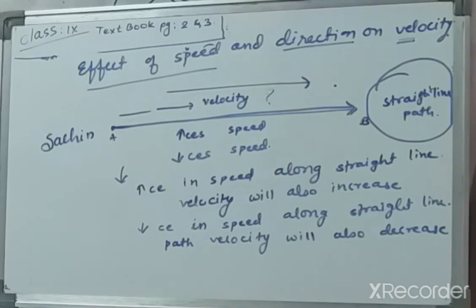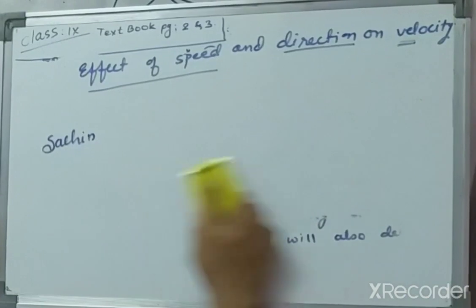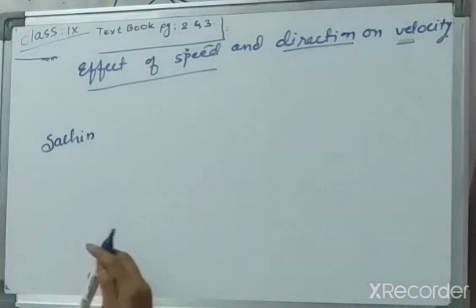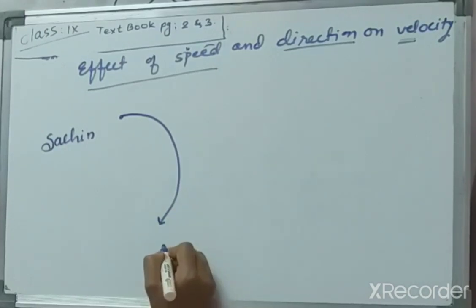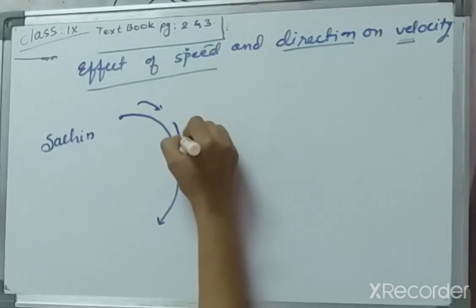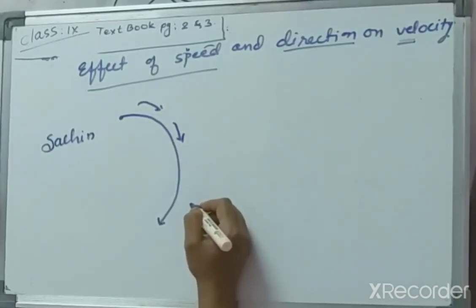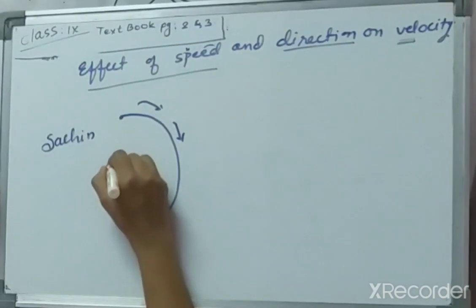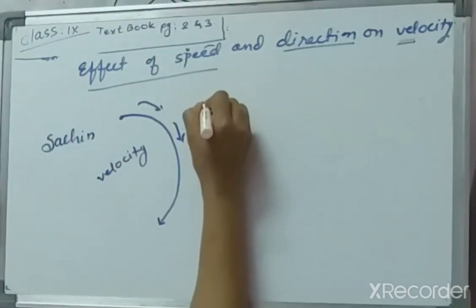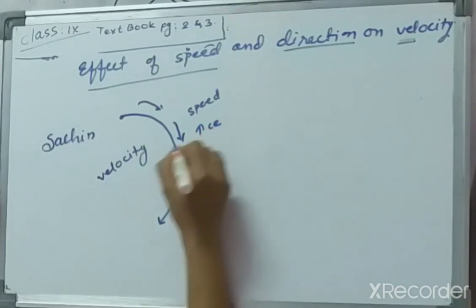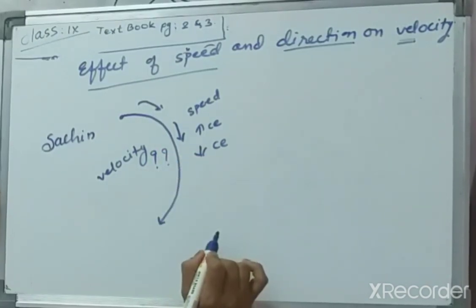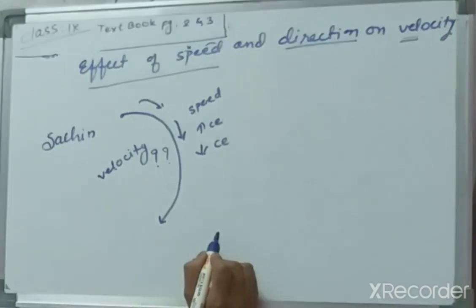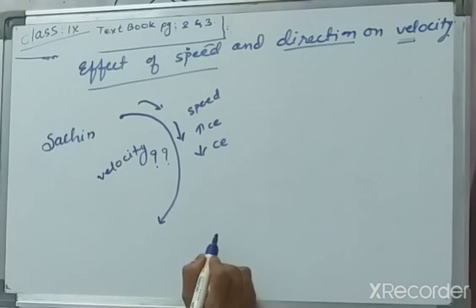Now the second point: in case of turning on the road. Say for example Sachin is moving on his bike and he is turning on the road. He is moving with a particular speed and he takes a turn. We have to find out what will be the effect on velocity. If the speed increases, what happens to velocity? If the speed is decreased, then what happens to the velocity?